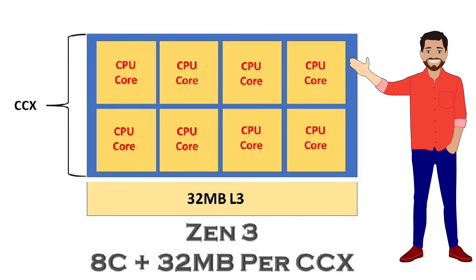Now let's have a look at Zen 3's layout. Here also we have 8 cores and 32 megabytes of L3 cache, but it's not divided like Zen 2. Because here the L3 cache is kept below the cores, hence all 8 cores have direct access to the full 32 megabytes of L3 cache. And communication between cores is also much faster than Zen 2.